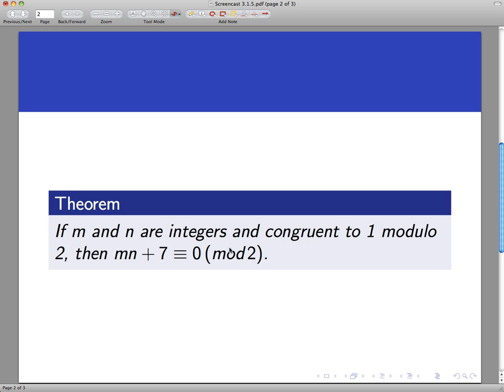So if M and N are integers, and both M and N are congruent to 1 modulo 2, then MN plus 7 is congruent to 0 mod 2.